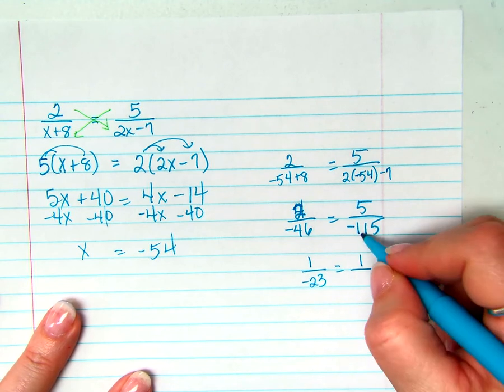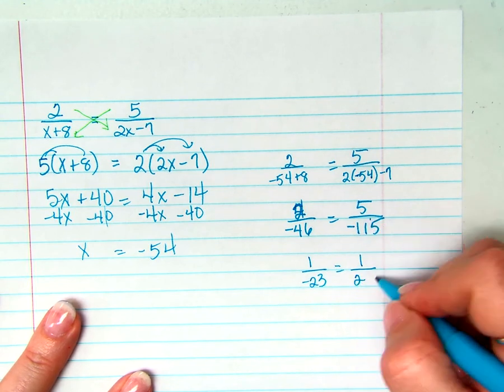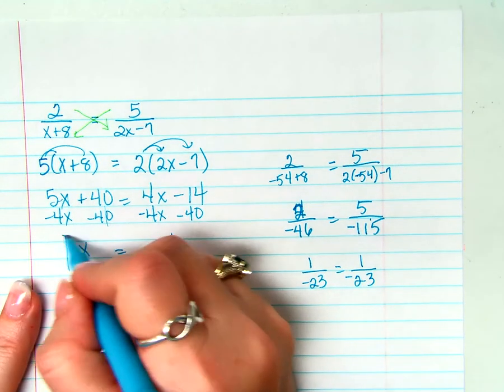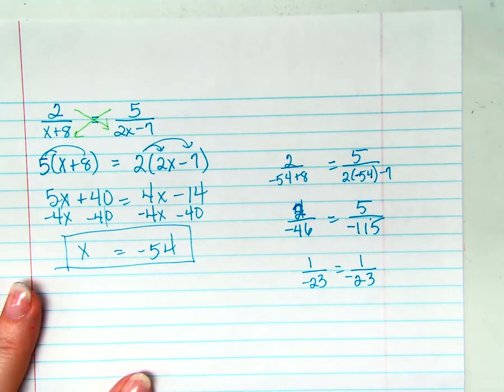1 over 2, ah, negative 23. So I know for sure now that this is the correct answer.